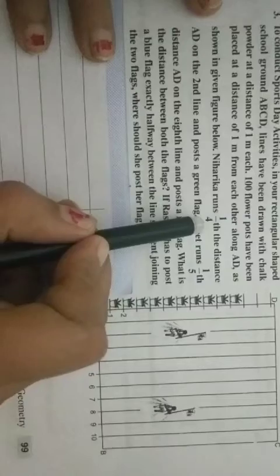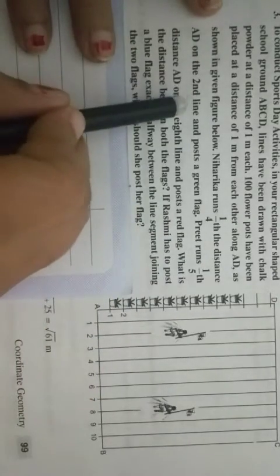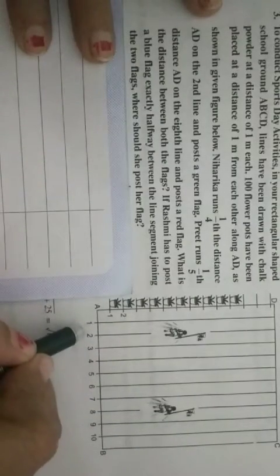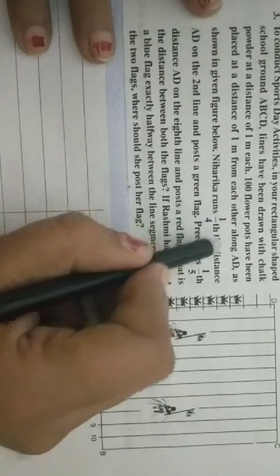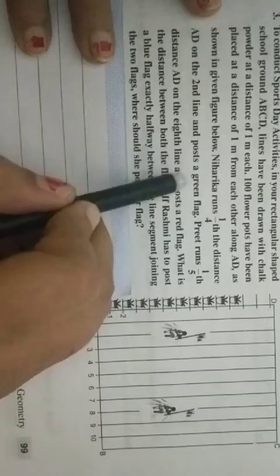Niharka runs 1 fourth of the distance AD on the second line. Second line means X axis. So, this is X coordinate. And Y coordinate. 1 fourth multiplied by 100. And post a green flag.